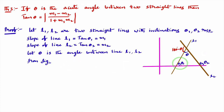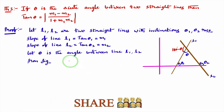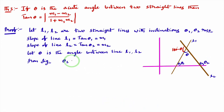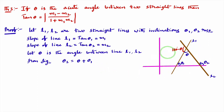From the figure, we identify the relation between theta, theta1, and theta2. Observe that theta2 is the exterior angle. We know that the exterior angle equals the sum of the two opposite interior angles, so theta2 equals theta plus theta1. From this, theta equals theta2 minus theta1.